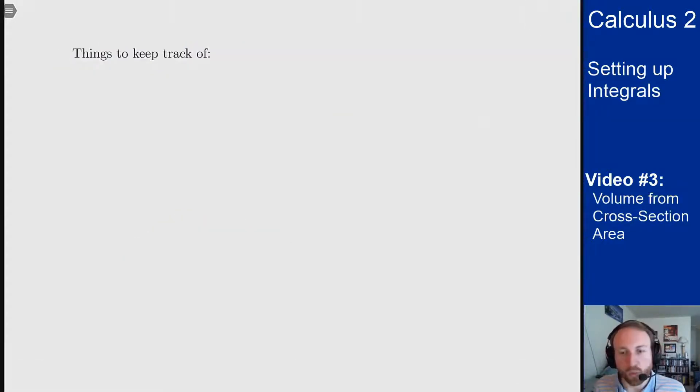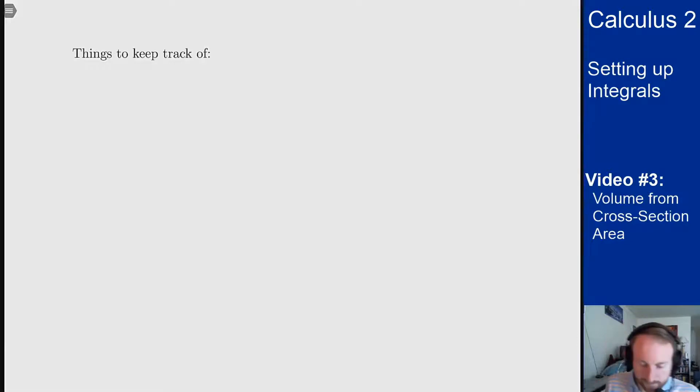Things you need to keep track of in this problem: which way are the cross sections being given to you? You could be told either horizontal cross sections or vertical cross sections. You need to keep track of which one you're being told and which way the problem is actually going. This part will basically tell you whether you want a dx or dy integral for this problem.